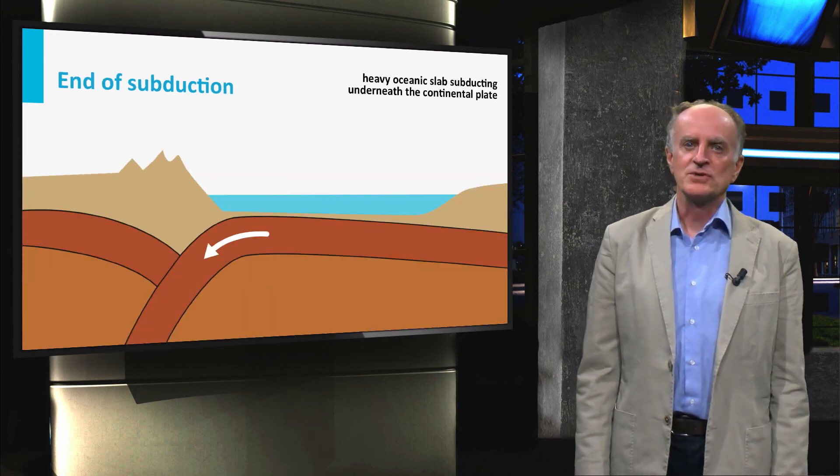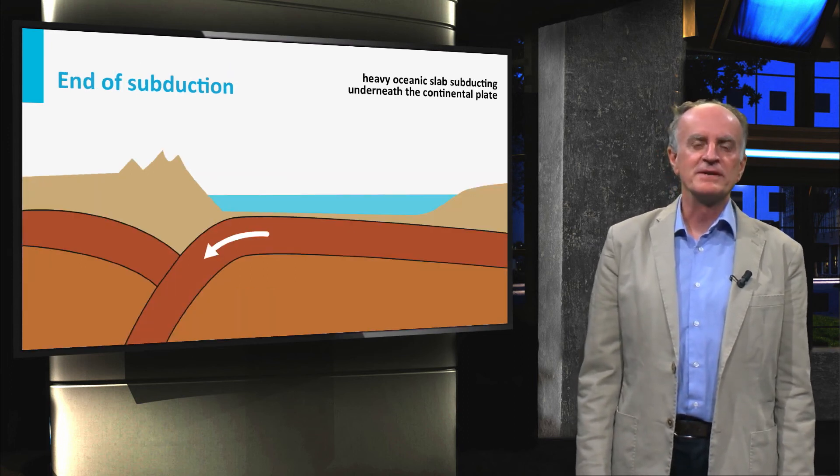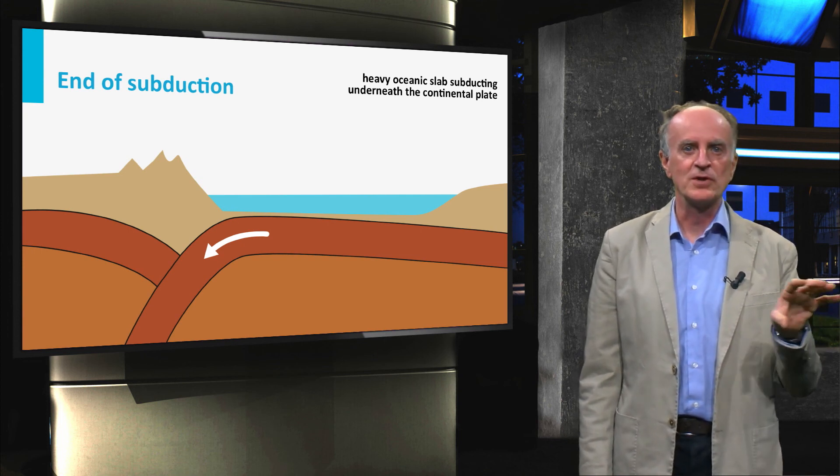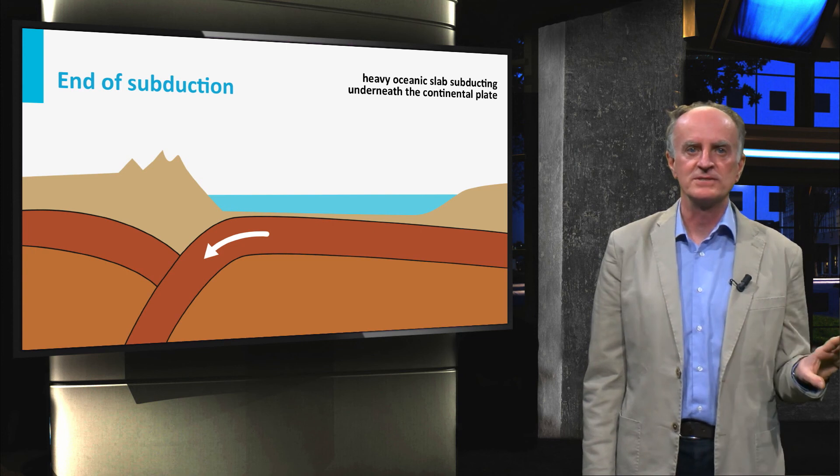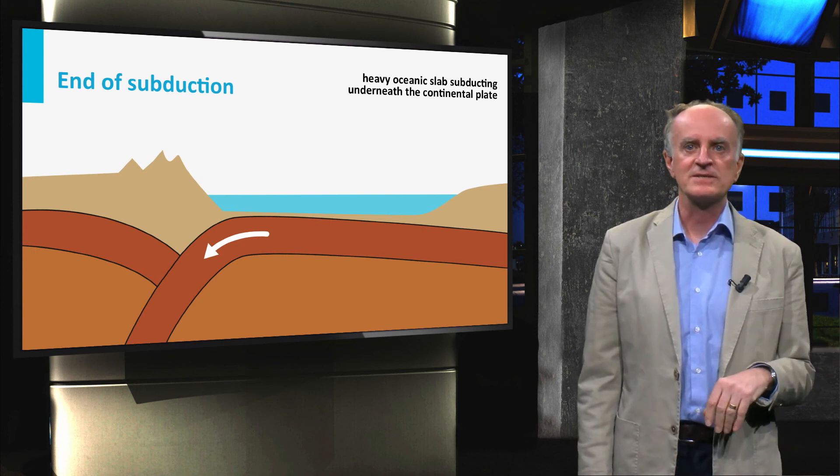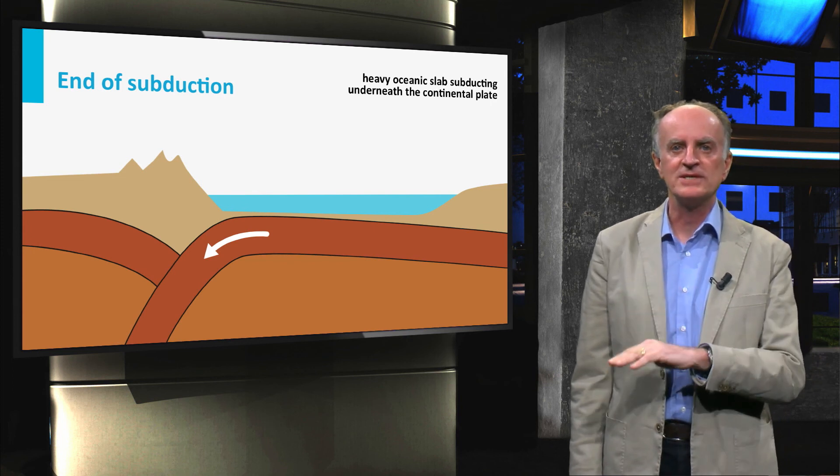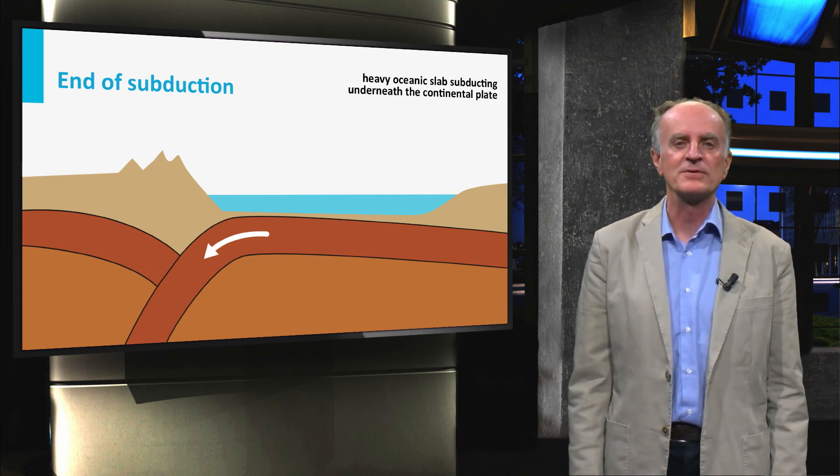The last issue I want to mention is that of the evolution through time of subduction zones. Some subduction zones continue for a long time without major changes. This is the case of Japan, where the Pacific oceanic plate has been subducting underneath Eastern Asia during the last 200 million years.